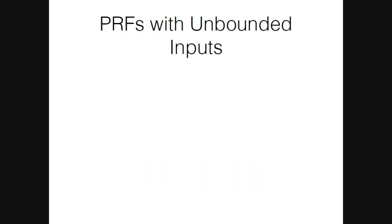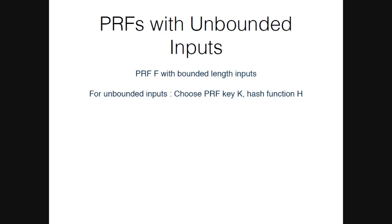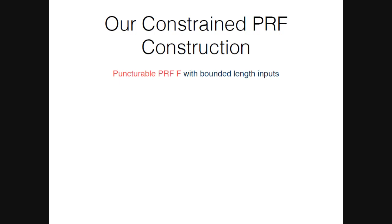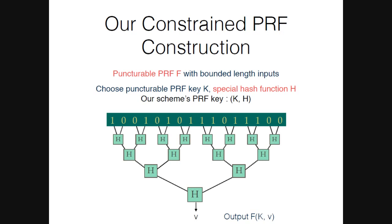Now let's look at the construction, starting with PRFs for unbounded inputs. This is trivial: if you have a PRF f working on bounded-length inputs, to get unbounded-length inputs you can hash the input down and apply the PRF. For a long input, apply the hash function in a Merkle tree fashion to get string v, and output f(k, v). Our construction starts similarly — our base PRF uses this approach but requires puncturable PRFs and a special hash function h, both needed only for the security proof.